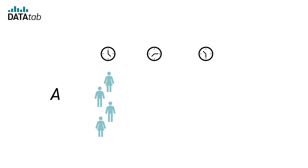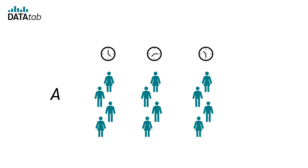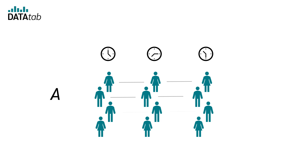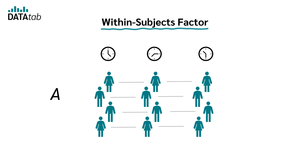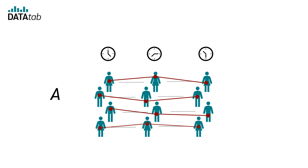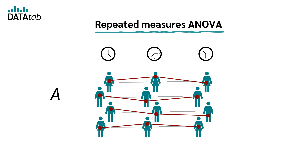We could also examine the impact of one diet across multiple time points — measuring cholesterol levels at the start of the diet, after two weeks, and after four weeks. The factor time has three levels: start, two weeks, and four weeks. In this case, the same subjects are exposed to all levels of the factor, so we have a within-subjects factor. We want to know if there is a difference in mean cholesterol levels between the different time points, and this is exactly what a repeated measures ANOVA does. Therefore, in a repeated measures ANOVA, we have within-subject factors.